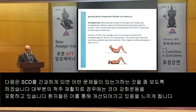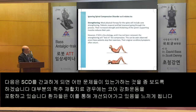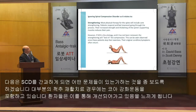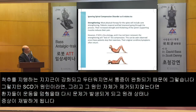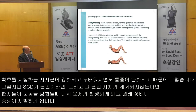Ignoring spinal compression disorder as it relates to strengthening. Most physical therapy for the spine will include core strengthening. Patients respond and feel improved going through the process. Their increased strength and thickening of the spine support muscles reduces their pain. However, if spinal compression disorder is the etiology and has not been removed, the strengthening will lock in the compression. This can be seen once the patient stops their exercises — their original condition or symptoms often return.